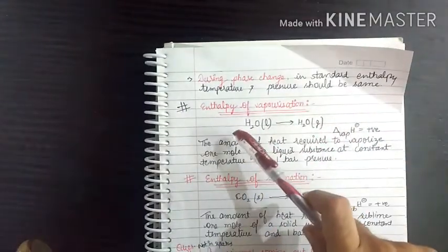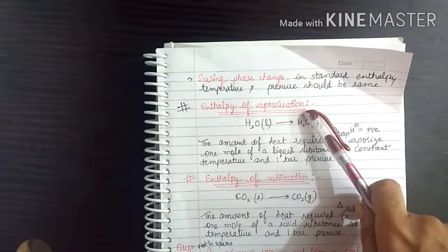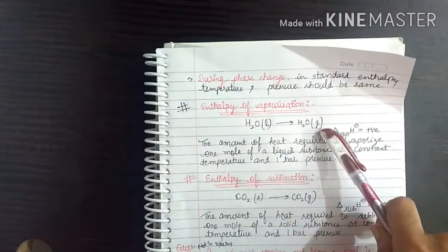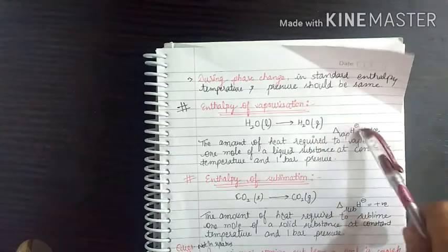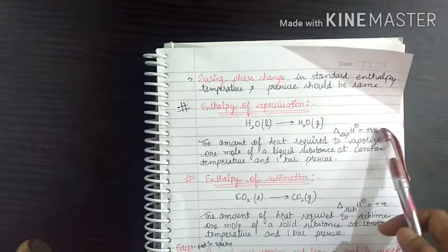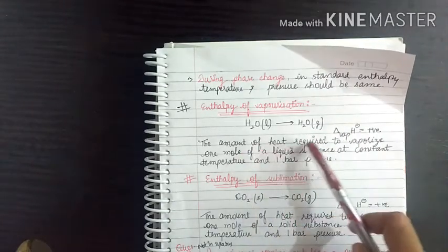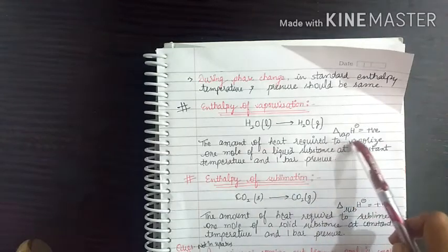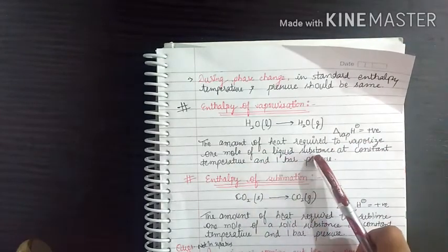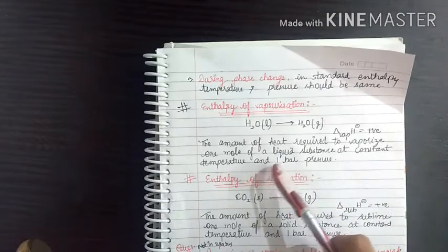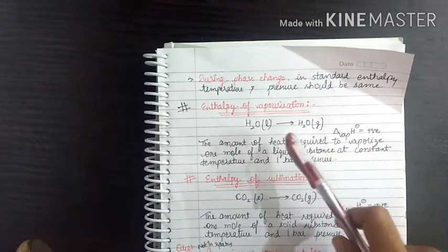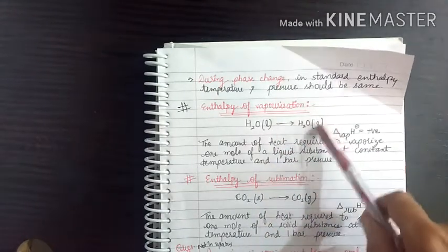Next is enthalpy of vaporization. Vaporization means liquid to gaseous state. It is the amount of heat required to vaporize 1 mole of a liquid substance at constant temperature and 1 bar pressure.